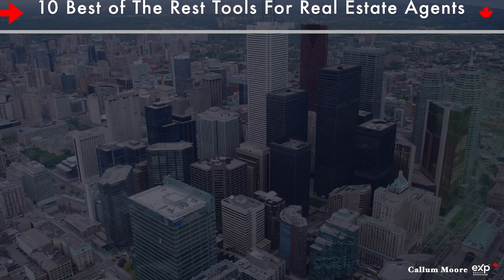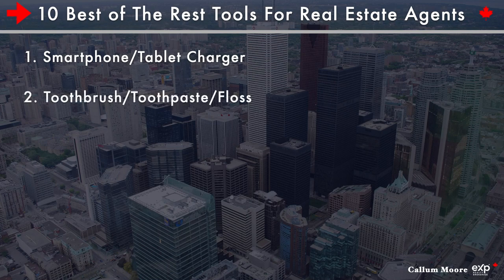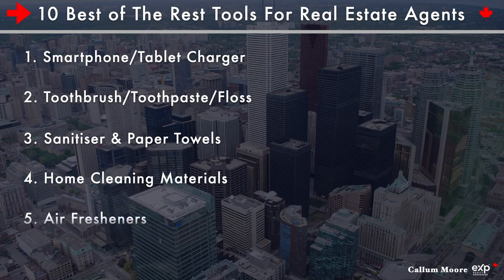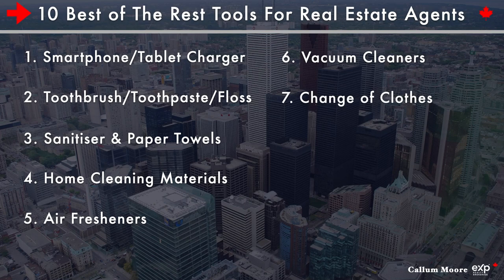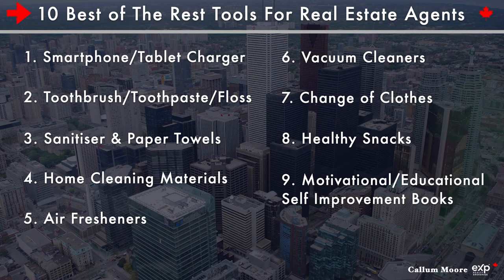Let's finish with a short list of extra tools you might need in your real estate bag: phone or tablet charger, toothbrush, toothpaste, floss, sanitizers, paper towels, home cleaning materials, air fresheners, even a vacuum cleaner. You'll have listings that have been professionally cleaned, and then the owners live in them for a couple of days and it starts to look messy — you need these tools ready. A change of clothes would be nice, at least a t-shirt in case of a coffee spill. Healthy snacks to avoid fast food. Motivational or self-improvement books are fantastic to keep energy and focus high. A journal is a great way to maintain daily purpose, reflect on the day, and feel accomplished when you look at what you've achieved.